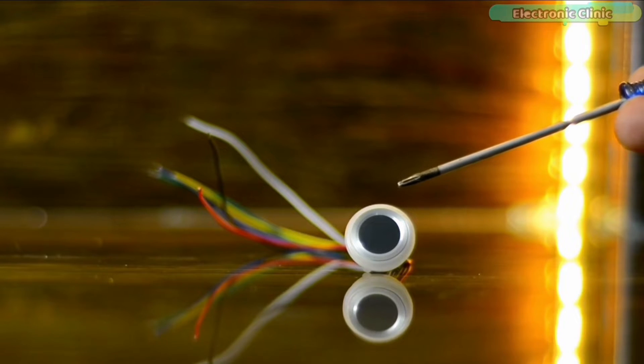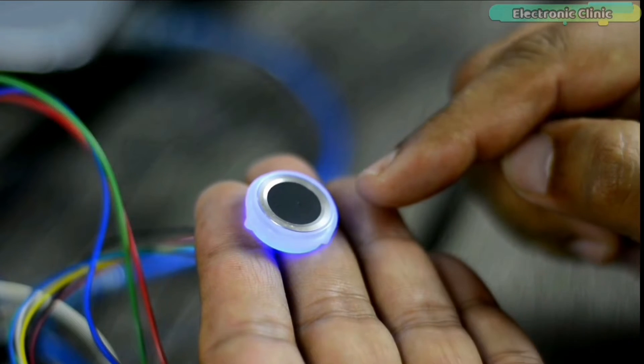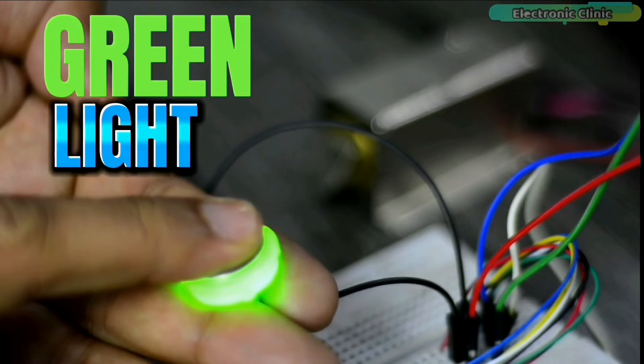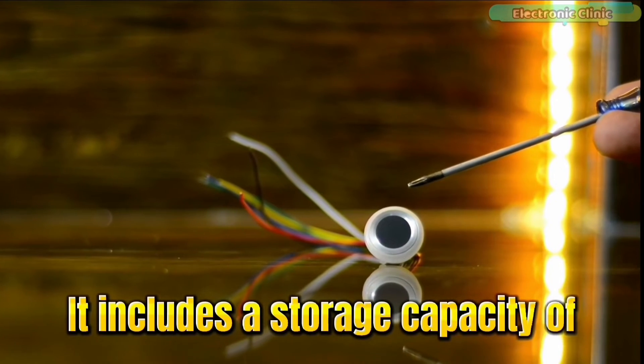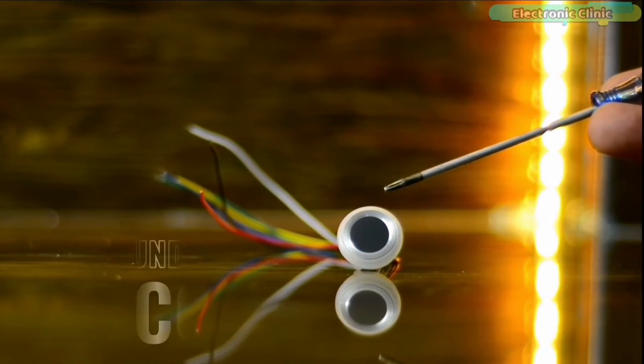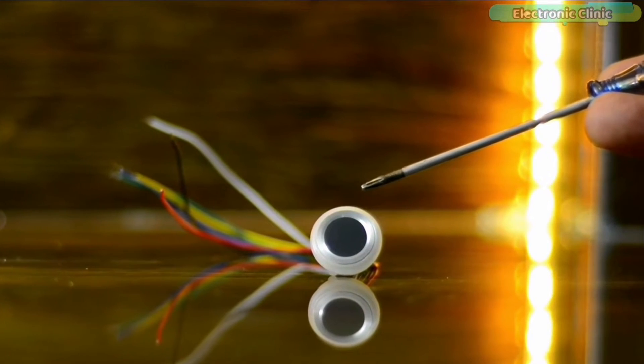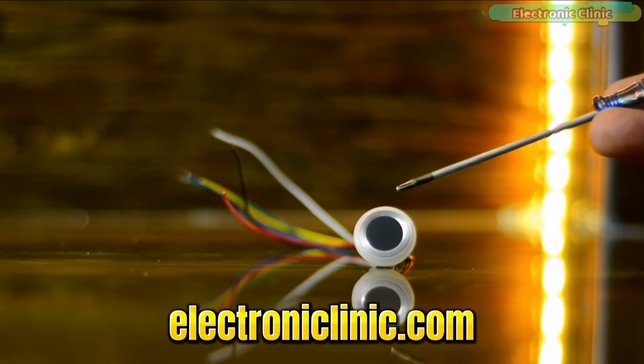There is an RGB LED inside this module, so when the fingerprint sensor is on, it shows blue light. When the fingerprint scanning operation is successful, it shows green light and when the operation fails, it shows red light. It includes a storage capacity of up to 120 fingerprints, a fast recognition speed of under one second, and a high resolution image sensor that captures clear and accurate fingerprints. For more technical specifications, read my article available on electronicclinic.com.